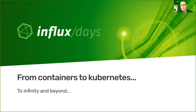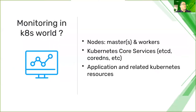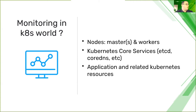Now let's see what we can do when we go to Kubernetes. What does it mean to monitor in a Kubernetes world? You want metrics about your nodes — to know if your masters and worker nodes are working as expected. You also need to monitor Kubernetes core services like etcd, CoreDNS, the network plugin, and so on. You want to monitor your applications as you are used to, and also monitor the related Kubernetes resources — for your application, you need to monitor your services, persistent volume claims, and so on.